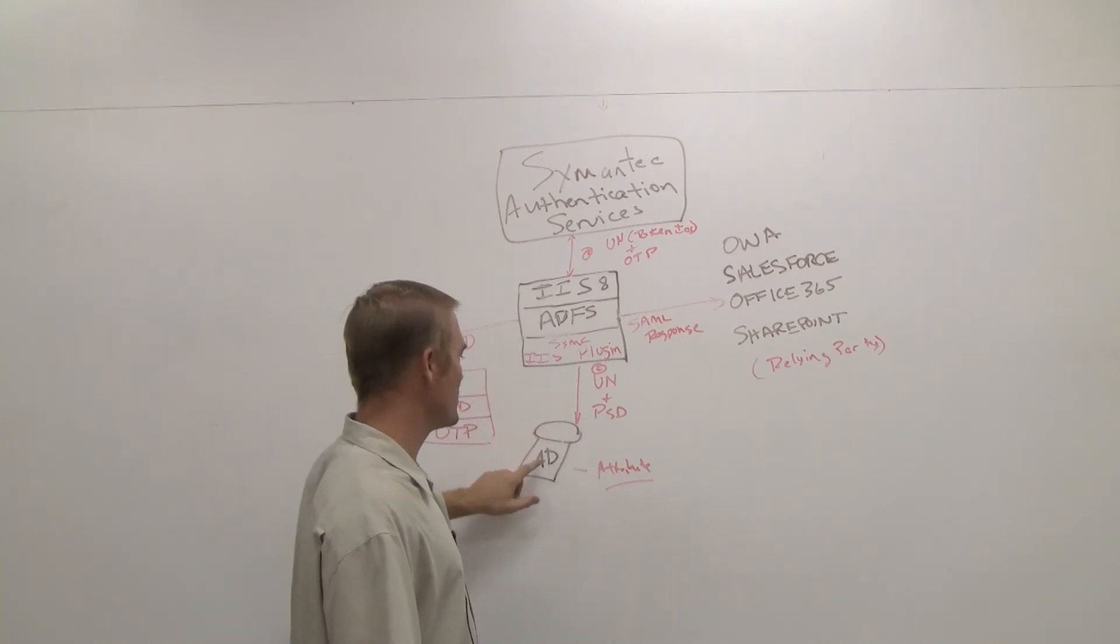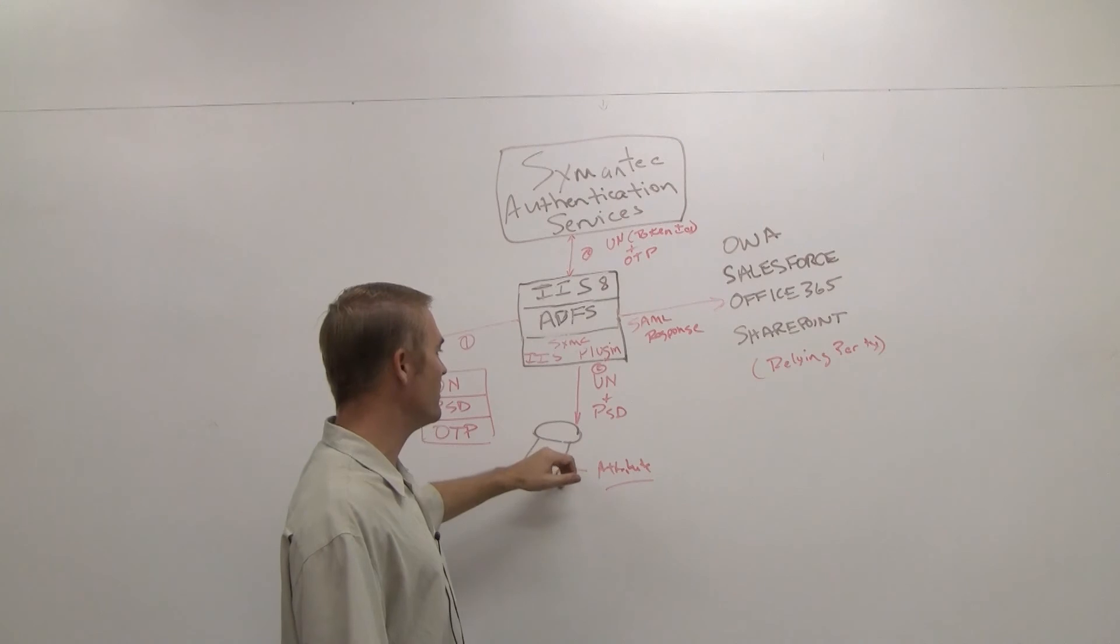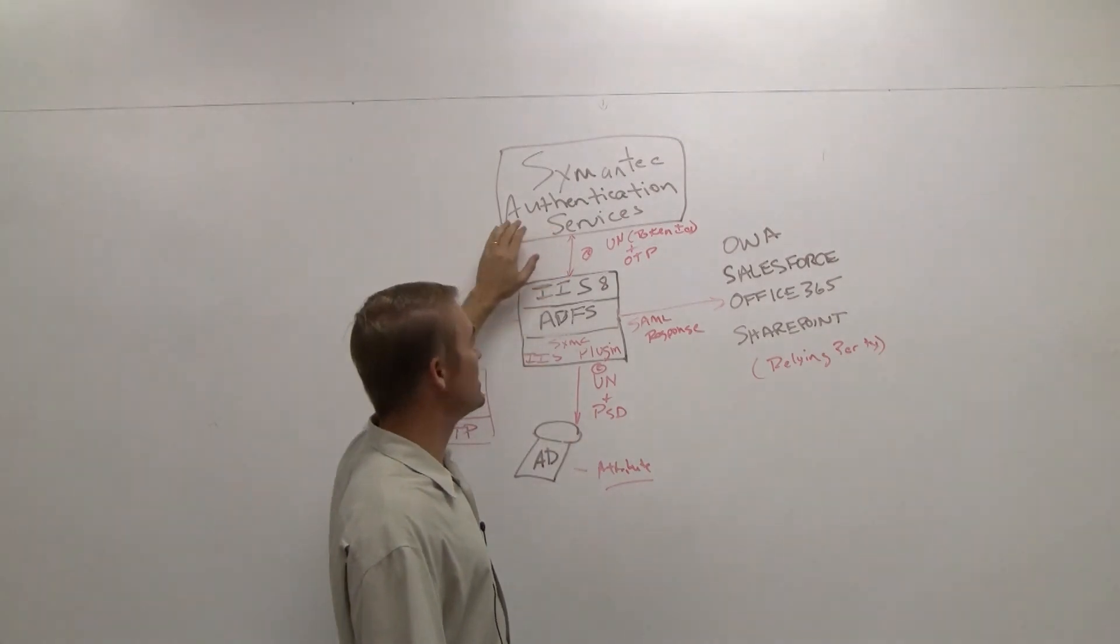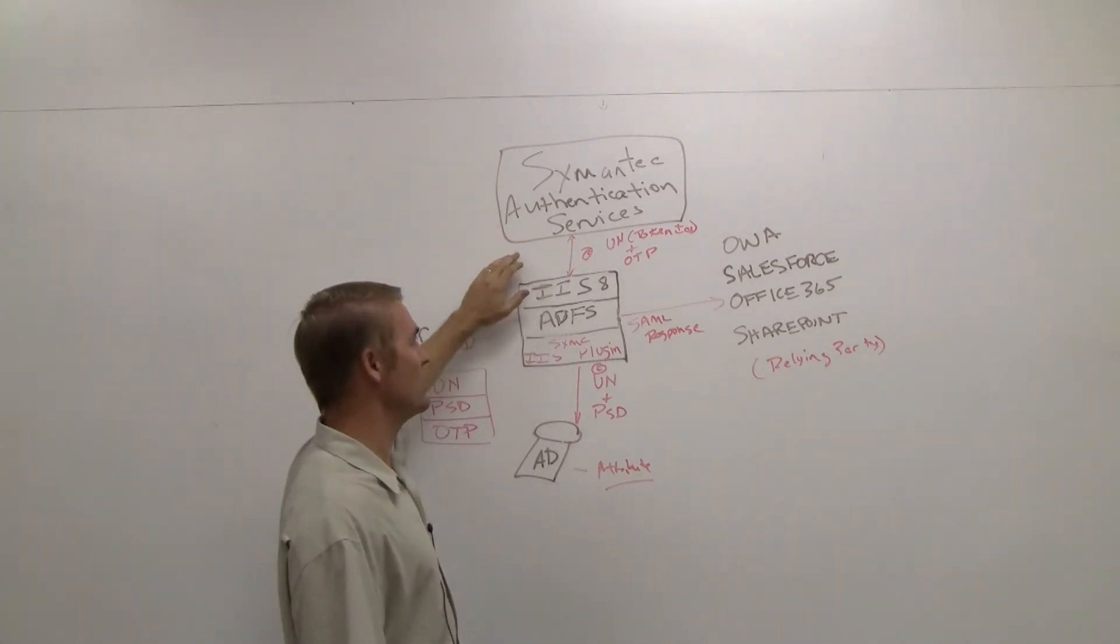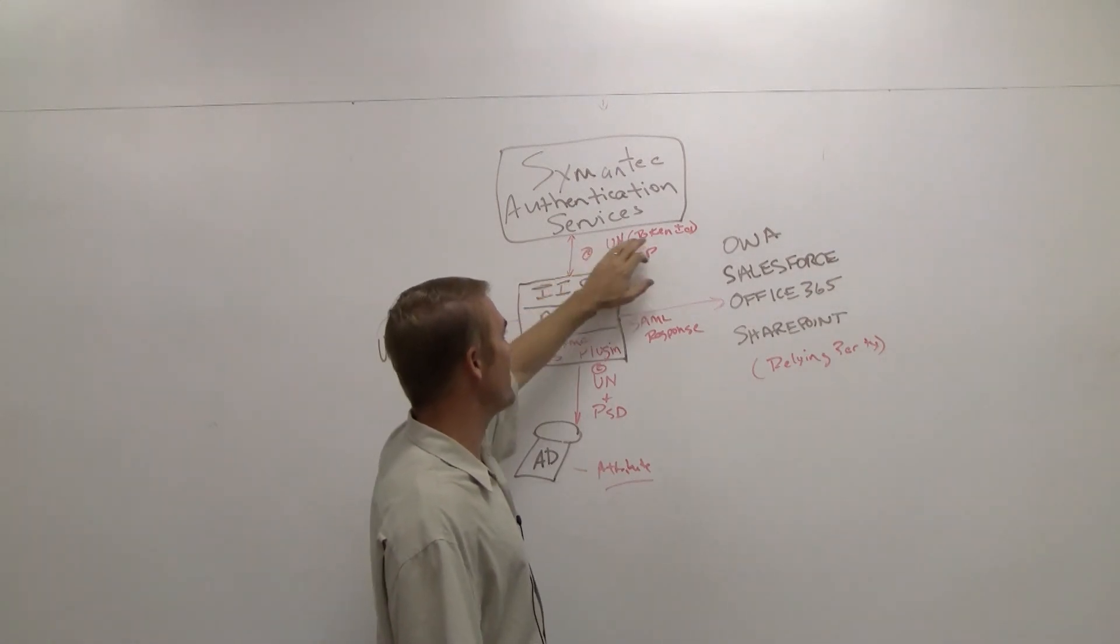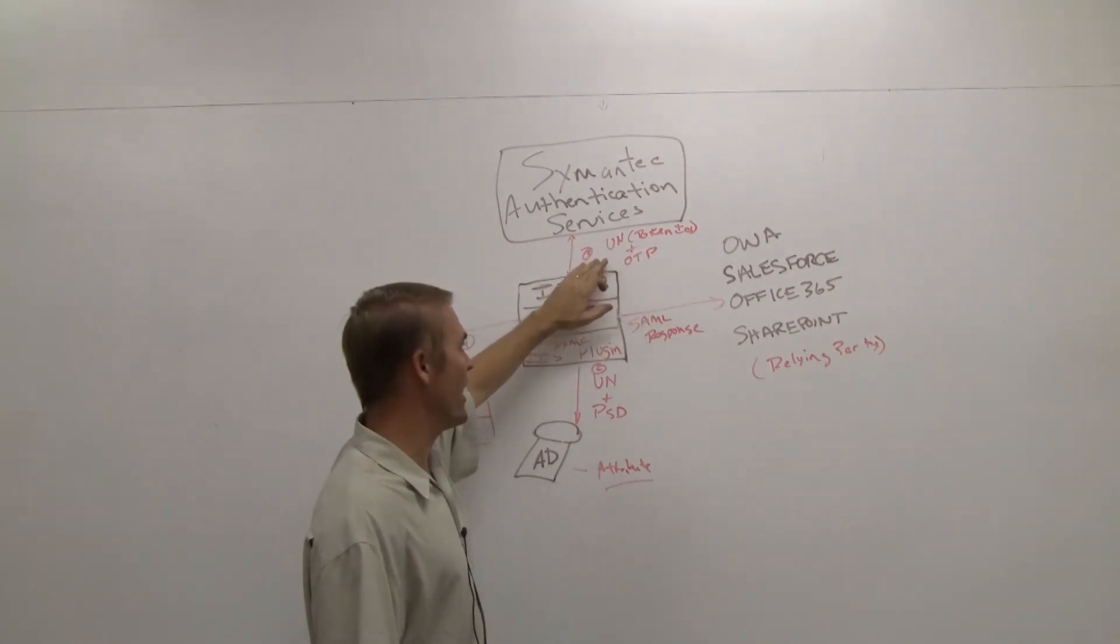That would be provided and sent over to the ADFS on the IIS web server. Username and password would be sent to Active Directory to validate first factor. The username and OTP would be sent up to the Symantec authentication services. The username would be mapped to a token ID so we could look up and validate the one-time password.